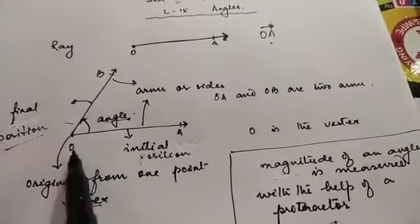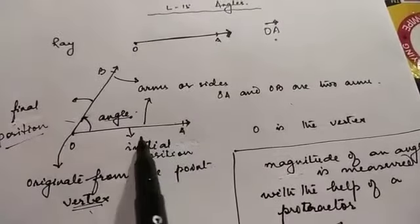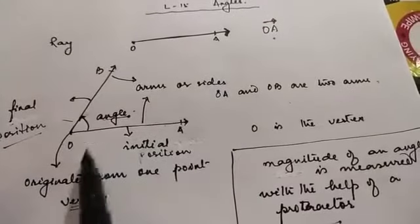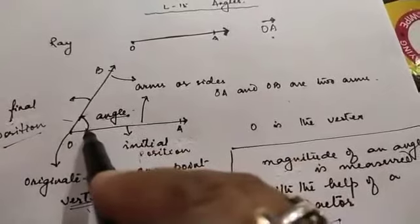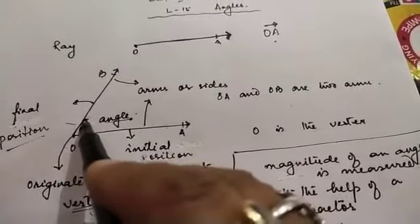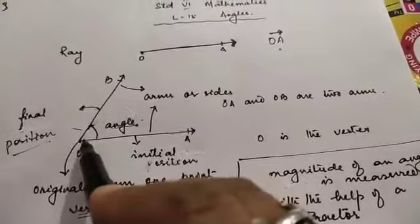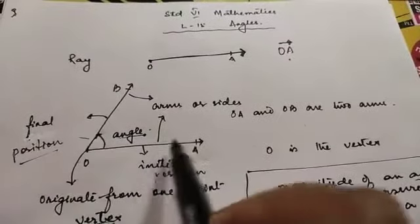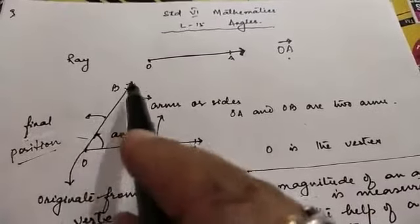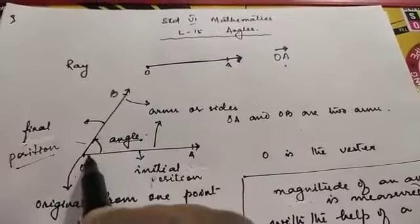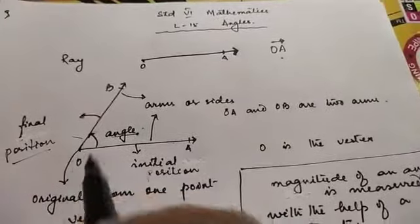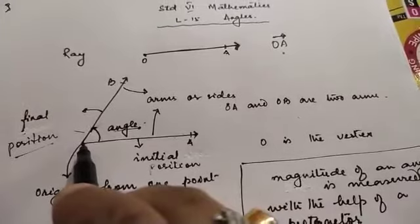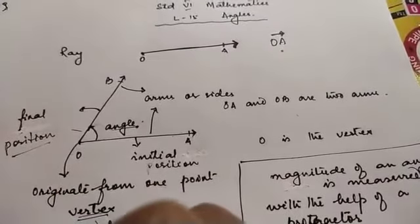Look at this figure. OA is the initial position of the ray. From OA, the ray started rotating — this was the initial position and it reached a final position OB. So now we have two rays OA and OB. These two rays have originated from one point. This point from where the two rays have originated is the vertex.